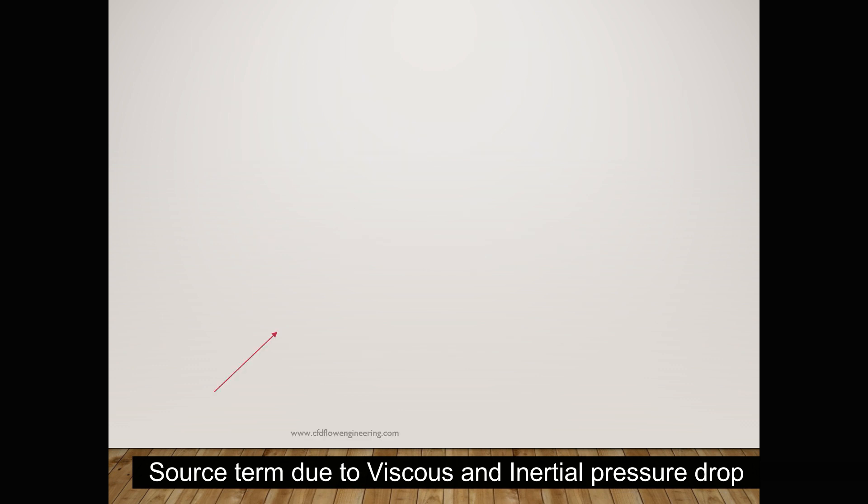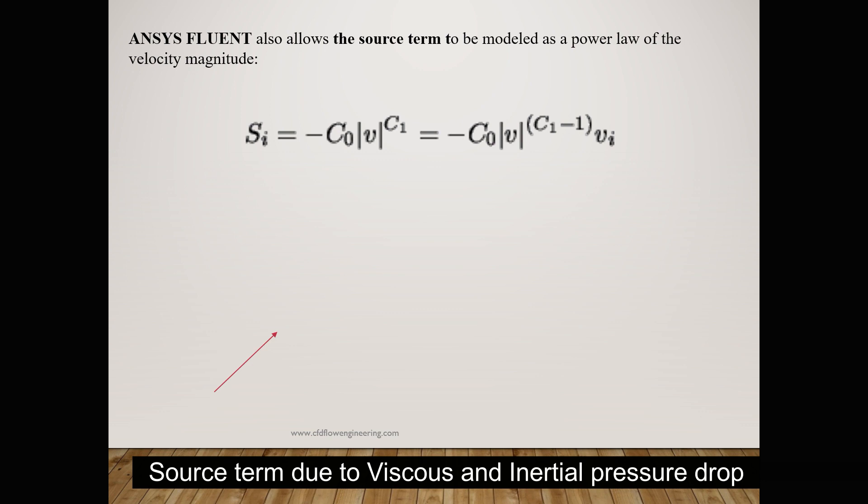ANSYS FLUENT allows the source term to be modeled based on the power law of velocity magnitude. If you know the pressure loss in terms of velocity magnitude, then we can directly define it in the CFD solver. If we don't have that, we have to calculate explicitly both the viscous term and inertial term.